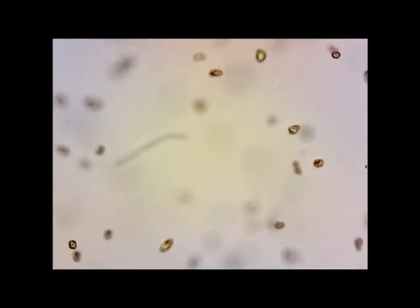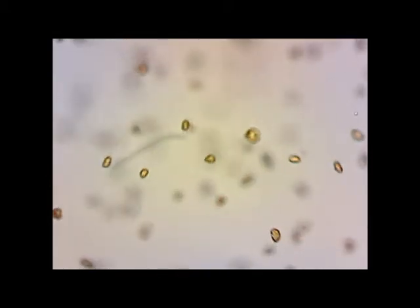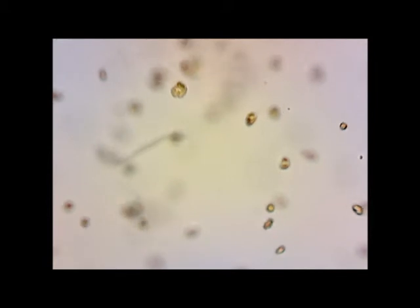Heterosigma also has two flagella that come from the side of the cell. That's what pushes them forward, but we can't really see those in live samples as they're moving all the time.